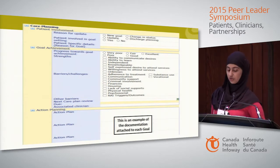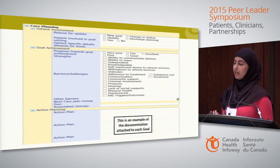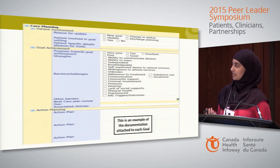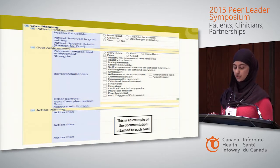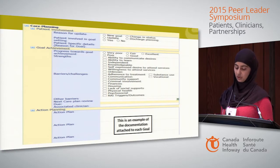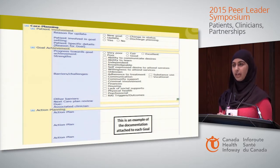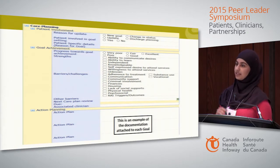The goal documentation form asks whether the patient has been involved in goal setting and allows the patient to provide their voice with patient-specific details. We track progress toward goal achievement in collaboration with the patient. Strengths and barriers are documented to help achieve goals. A section for associated clinician lets the most responsible clinician put their name, giving the rest of the interprofessional team a point person. Action plans outline what will be done to help the patient meet that goal.